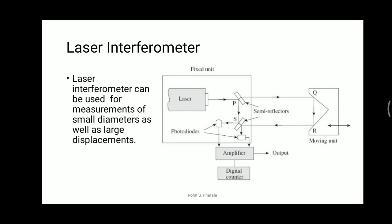When the moving slide is displaced by a quarter wavelength, the path difference P-Q-R-S minus P-S becomes half a wavelength, and the output of the photo diode changes from maximum to minimum or minimum to maximum.